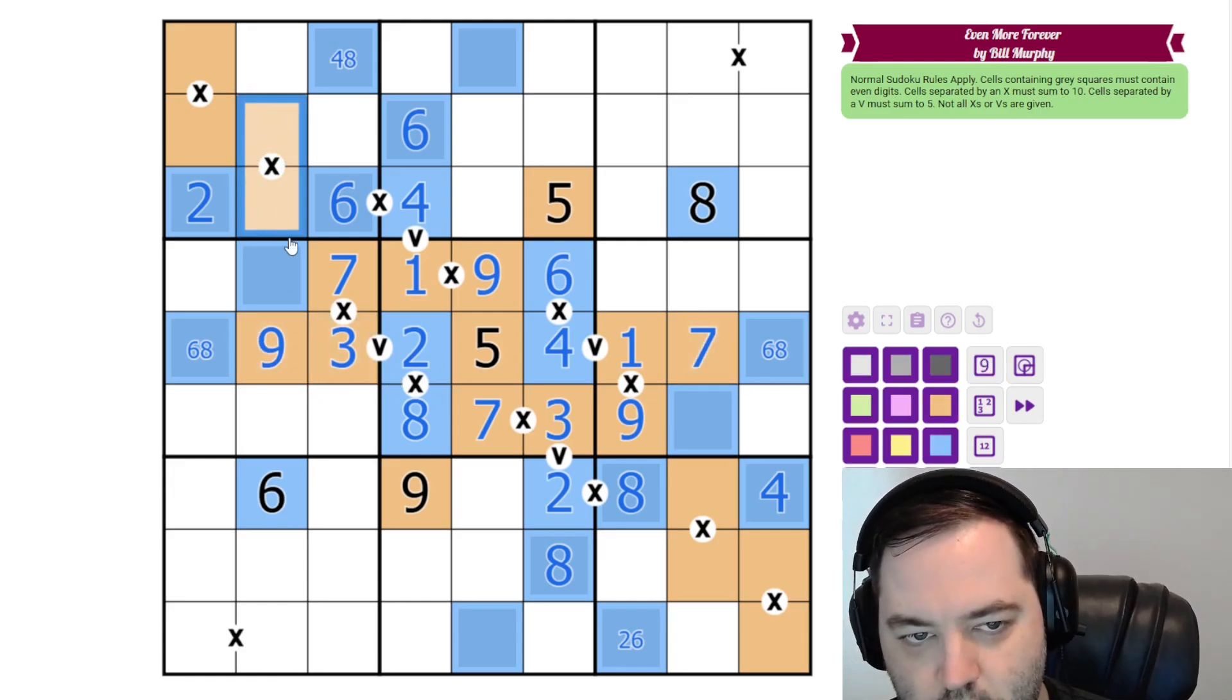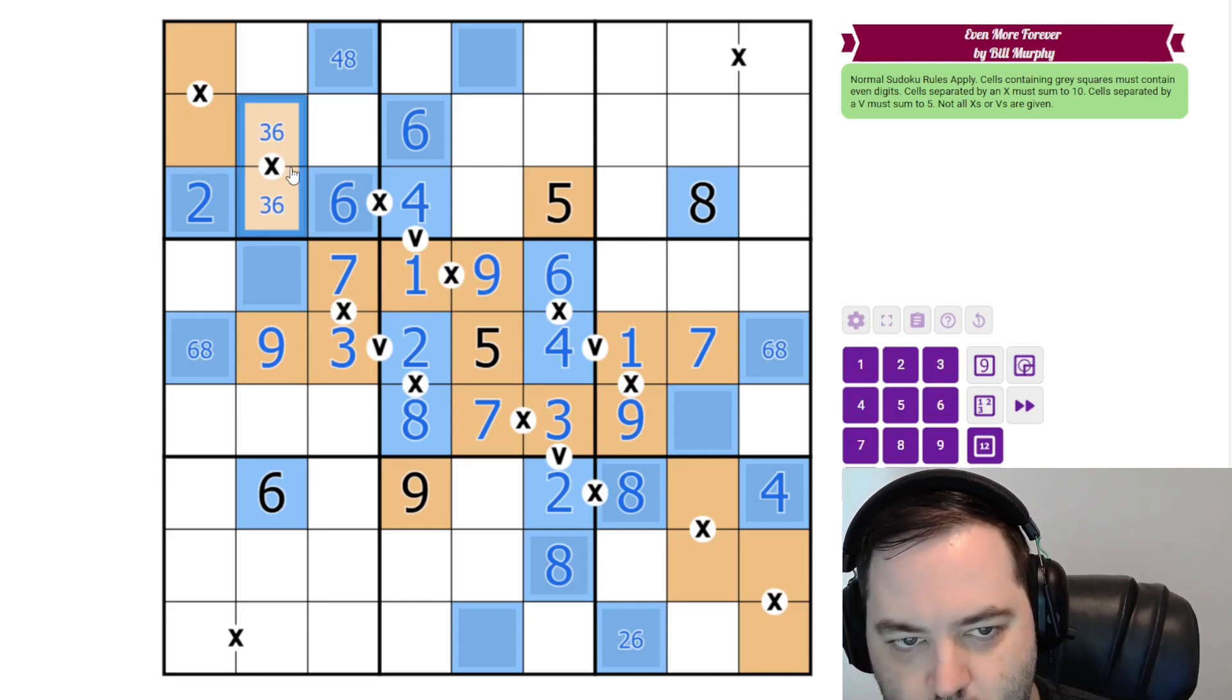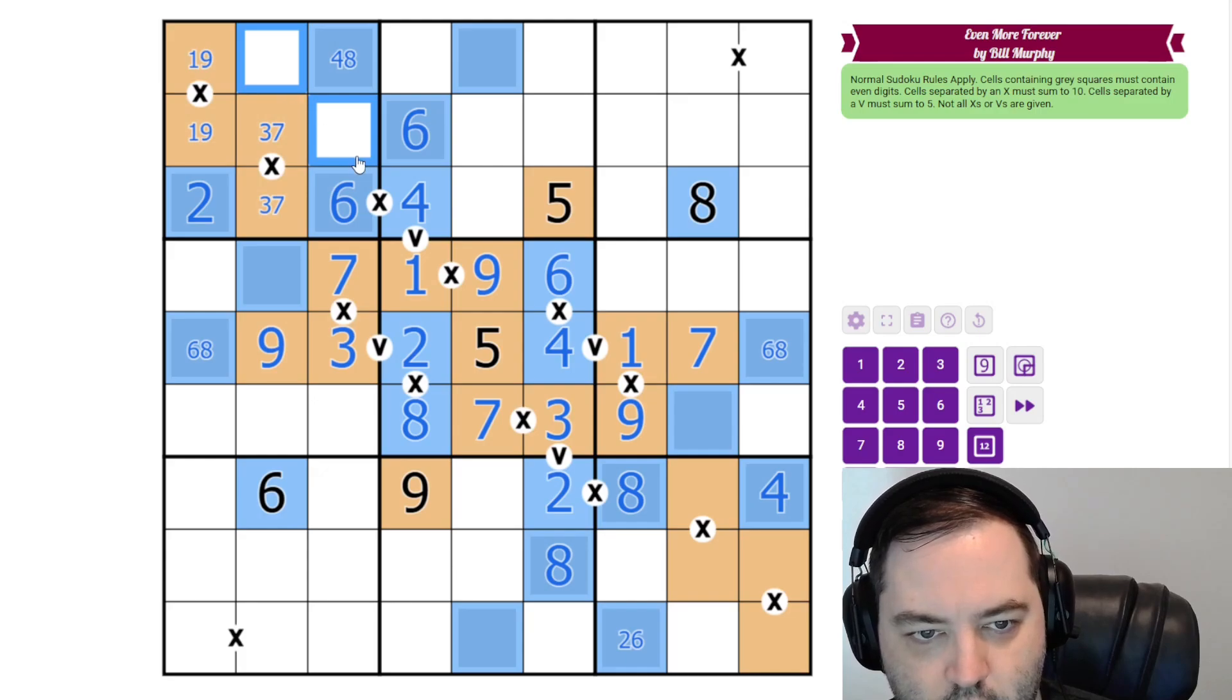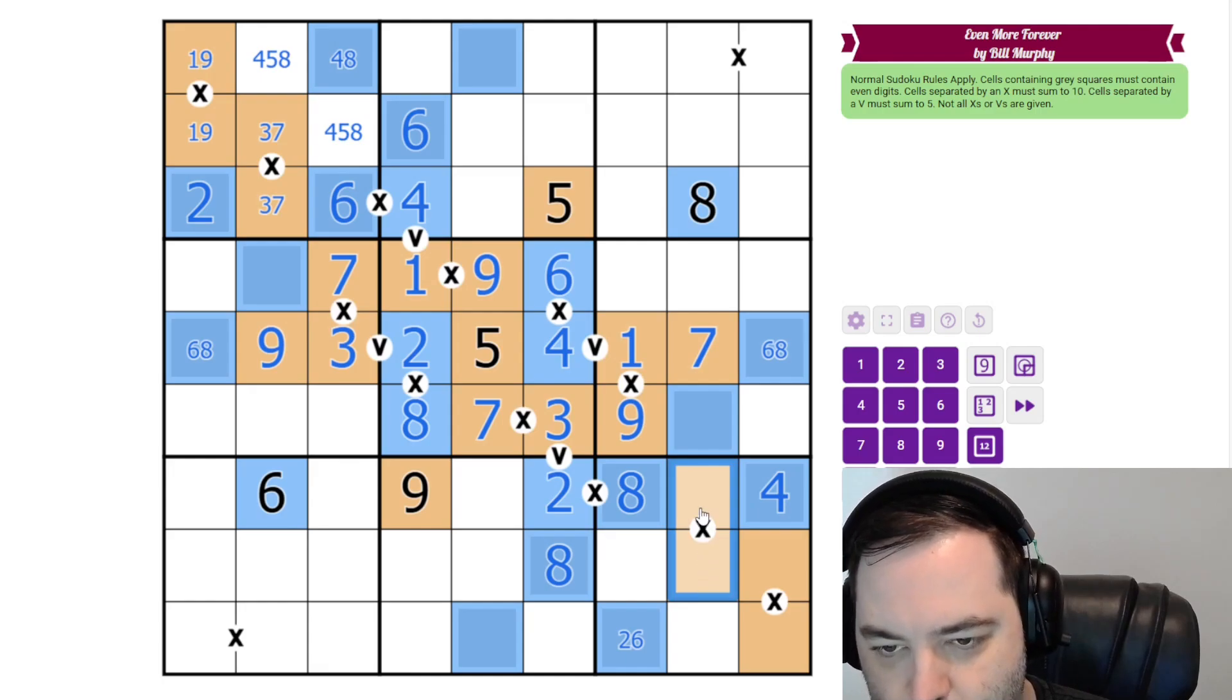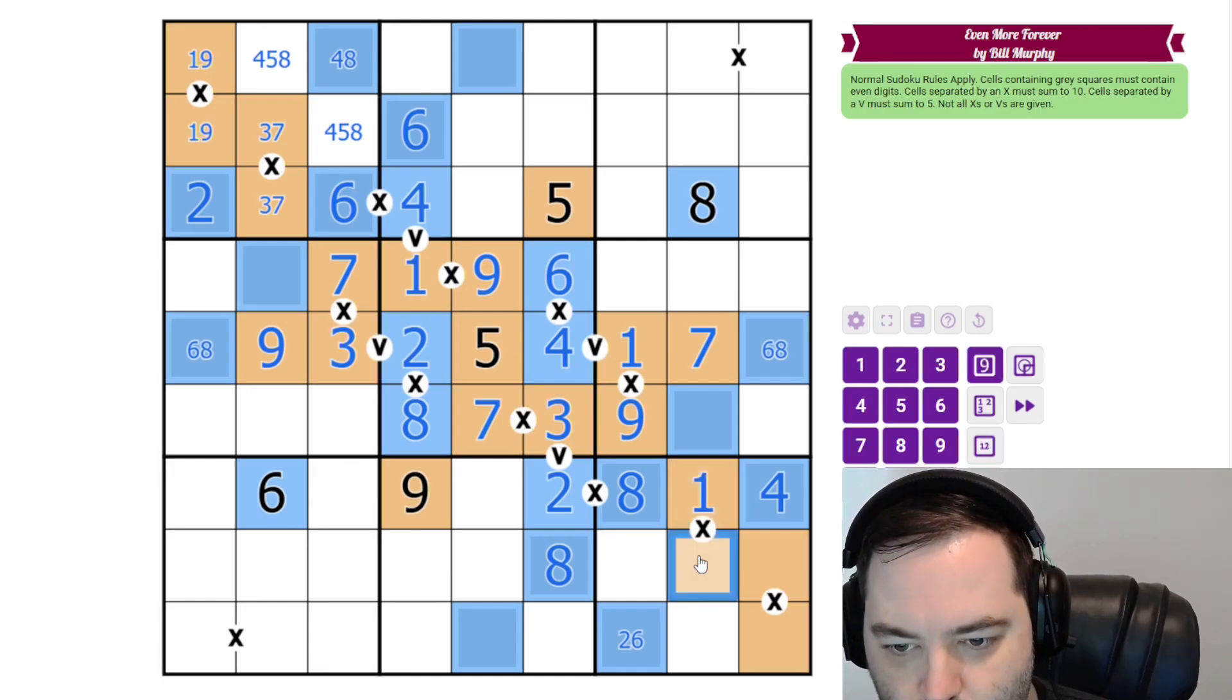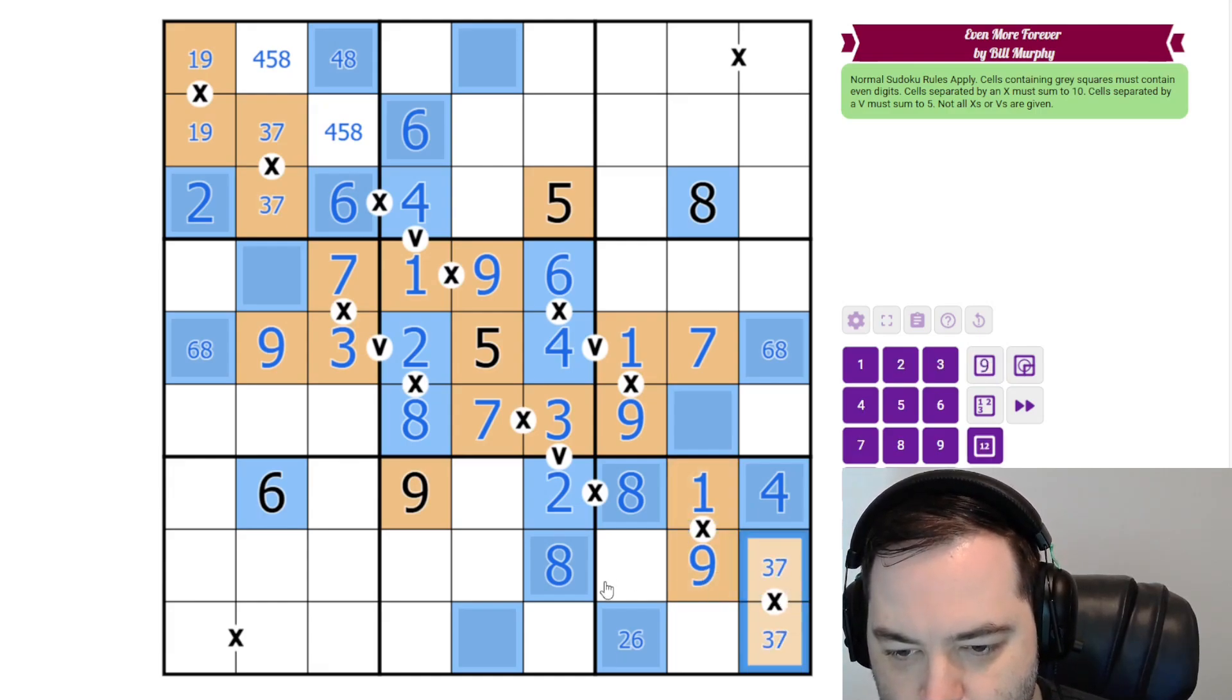Since we have a nine here, we know this is not one nine. So this is three, seven. This is one, nine. And our remaining digits are four, five, and eight. And here we have a seven. So this is not three, seven. This is one, nine. In that order, a little bit of a symmetry right here. The nine can't go here. So it goes here with the one. This is three, seven. These are two, five, six.